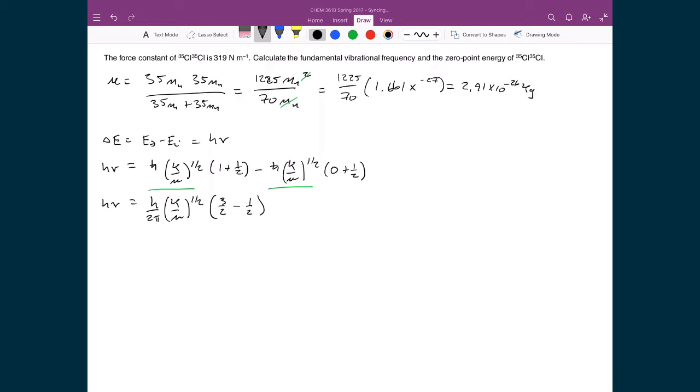I can also cross off my h's. So I have a direct statement that tells me the frequency of this photon: 1 over 2π times the square root of k, which is 319, divided by mu, which I just calculated as 2.91 times 10 to the minus 26. That means the frequency equals 1.667 times 10 to the 13 hertz.